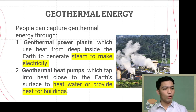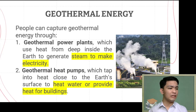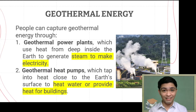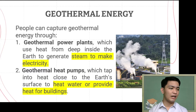What is the difference between the two? Geothermal power plants use heat from deep inside the earth to generate steam and convert that steam into electricity for different purposes. Geothermal heat pumps tap into heat close to the earth's surface to heat water or provide heat for buildings — and can also cool them down. Geothermal power plants are large scale, converting heat into electricity, while heat pumps are more for household or building-level heating use.